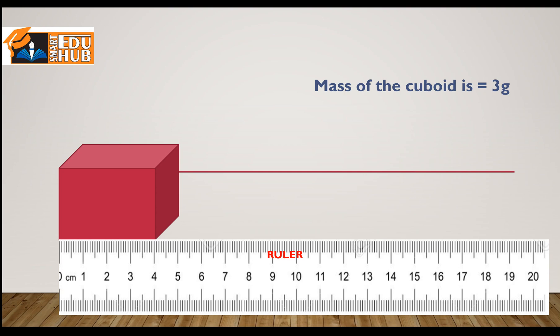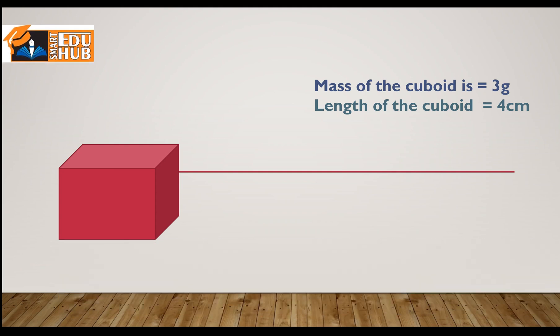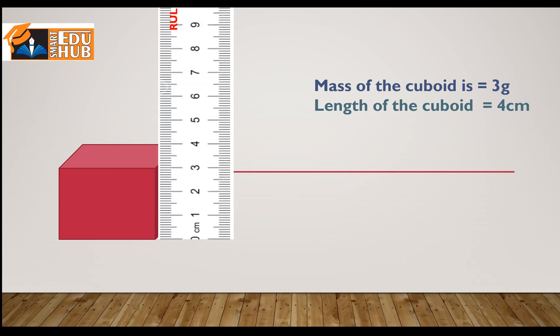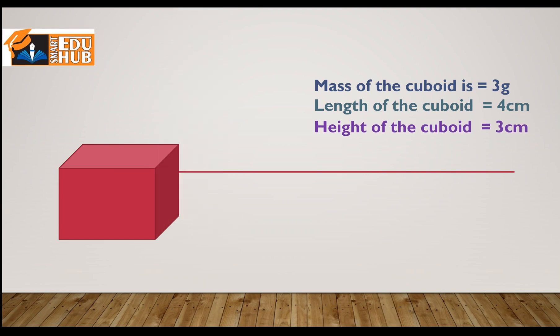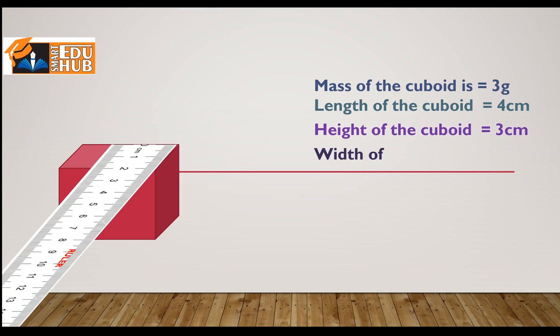As you can see, the length is equal to 4 centimeters. I'm going to write down all the readings on one side. Next, the height looks like 3 centimeters, so the height of the cuboid is 3 centimeters. And the width of the cuboid is 2 centimeters.